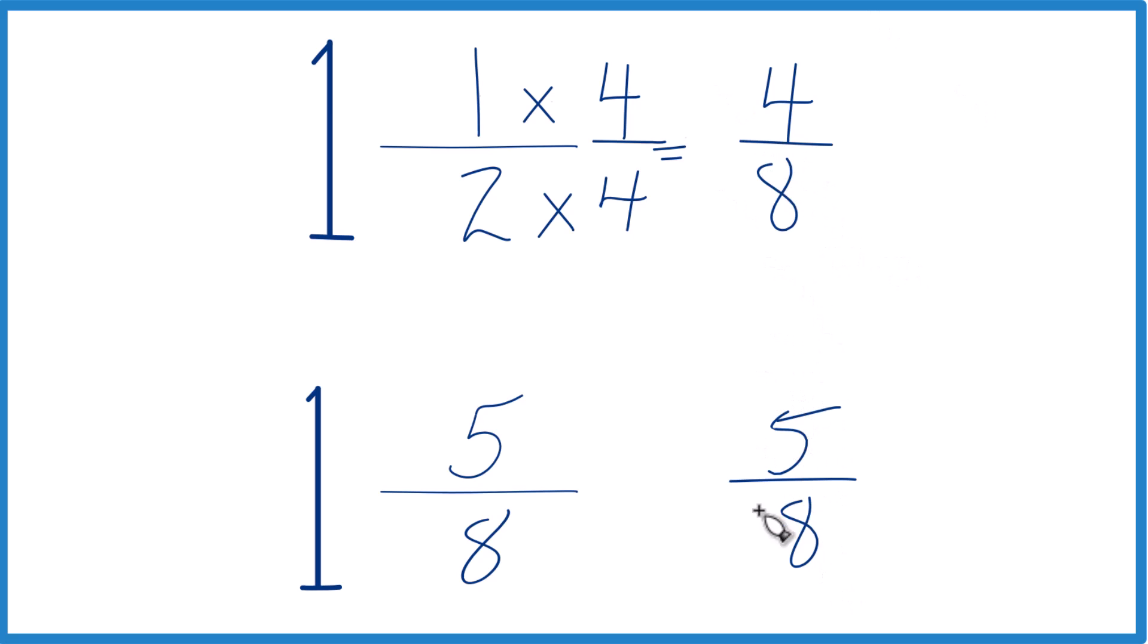And since we have the same denominator, 5 is greater than 4, 5 eighths is greater than 4 eighths. And we can say 1 and 5 eighths is greater than 1 and 4 eighths, or 1 and 1 half, since those are equivalent.